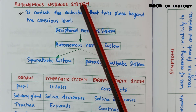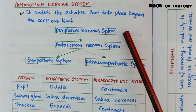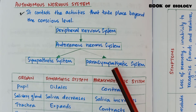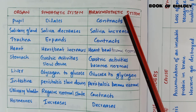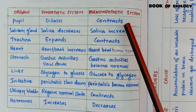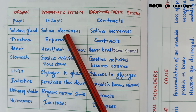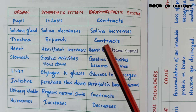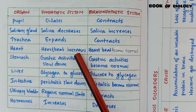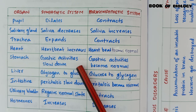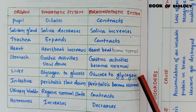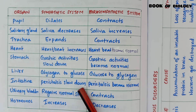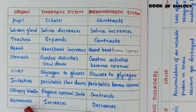Autonomic nervous system: controls activities that take place beyond the conscious level; belongs to the peripheral nervous system. Actions of sympathetic and parasympathetic nervous systems — Pupil: sympathetic dilates, parasympathetic contracts. Salivary gland: sympathetic decreases saliva, parasympathetic increases saliva. Trachea: sympathetic expands, parasympathetic contracts. Heart: sympathetic increases heartbeat, parasympathetic normalizes. Stomach: sympathetic slows gastric activity, parasympathetic normalizes. Liver: sympathetic converts glycogen to glucose, parasympathetic converts glucose to glycogen. Intestine: sympathetic slows peristalsis, parasympathetic normalizes. Urinary bladder: sympathetic relaxes, parasympathetic contracts. Hormone production: sympathetic increases, parasympathetic decreases.